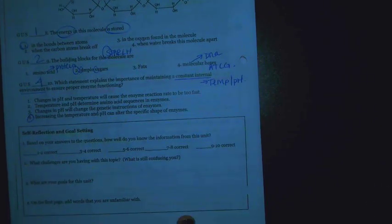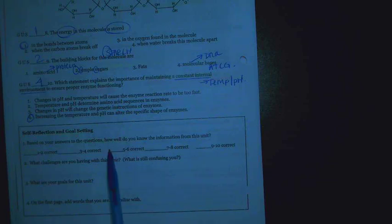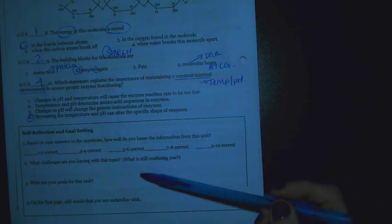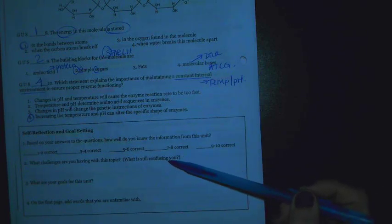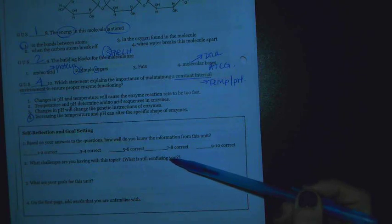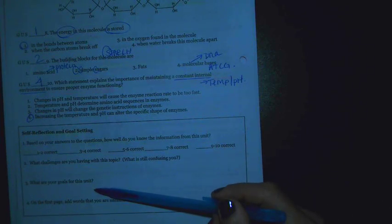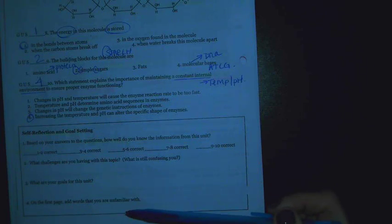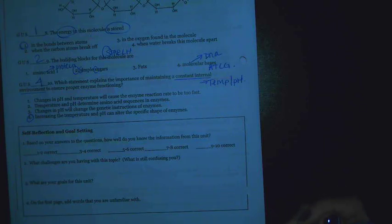After you've completed that, you should go through the self-reflection. Think, how many did I get right? How many did I get wrong? What questions did I get wrong? What's confusing me? What should I be studying? And then here, what are your goals? Were there any words you didn't know? Maybe you don't know catalyst or denature or starch. Write those down.